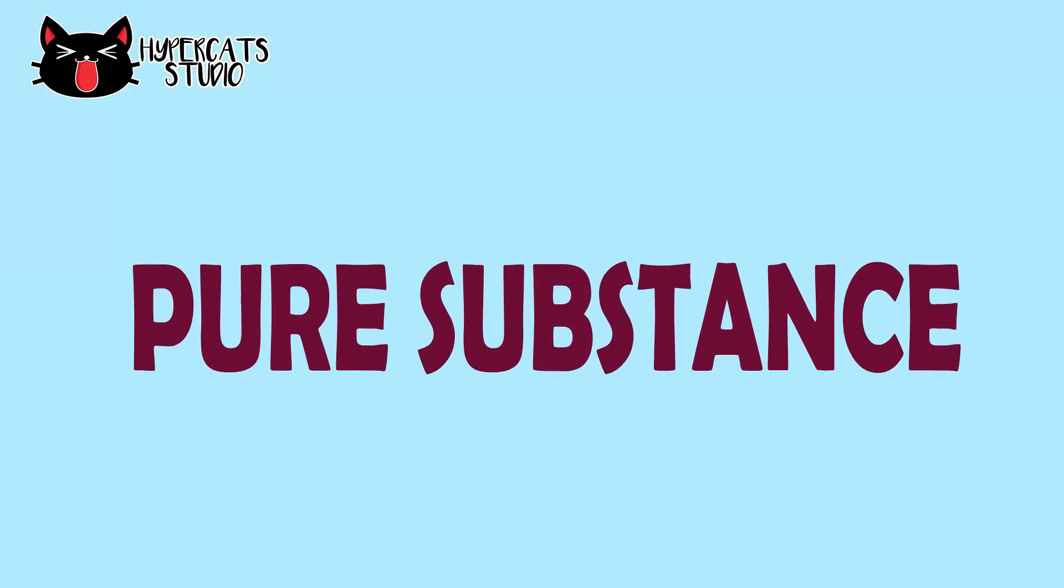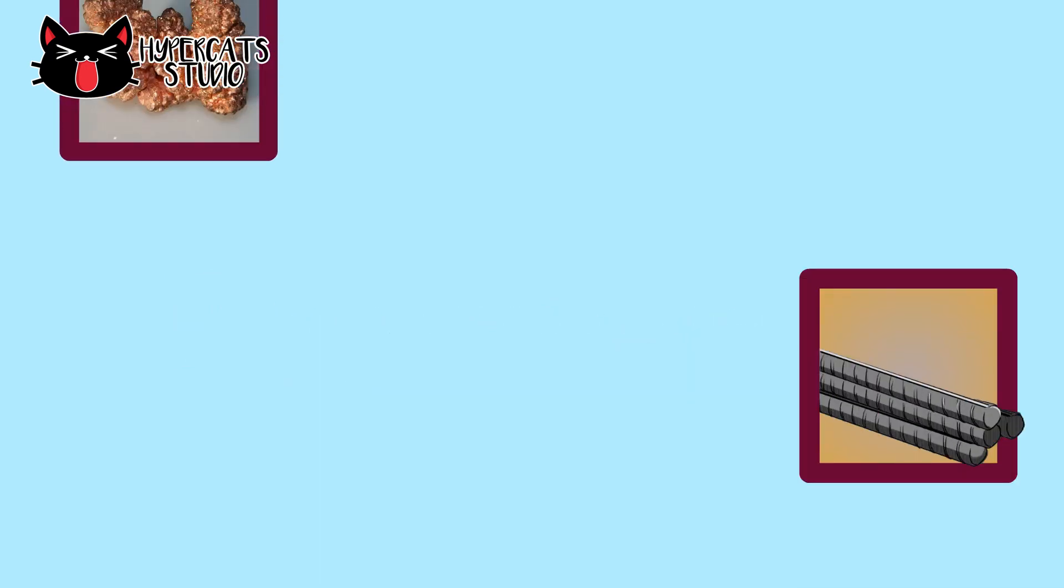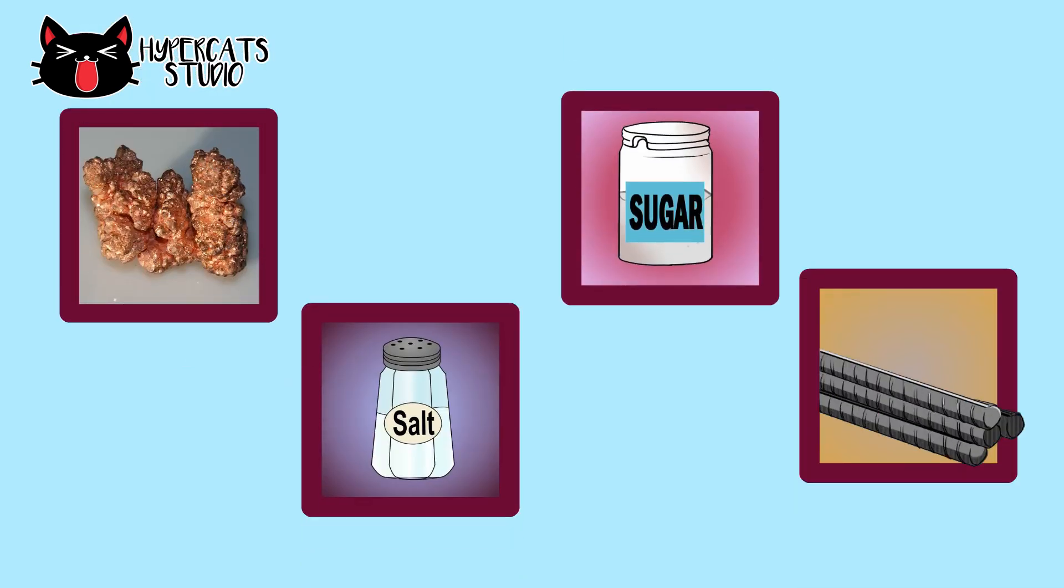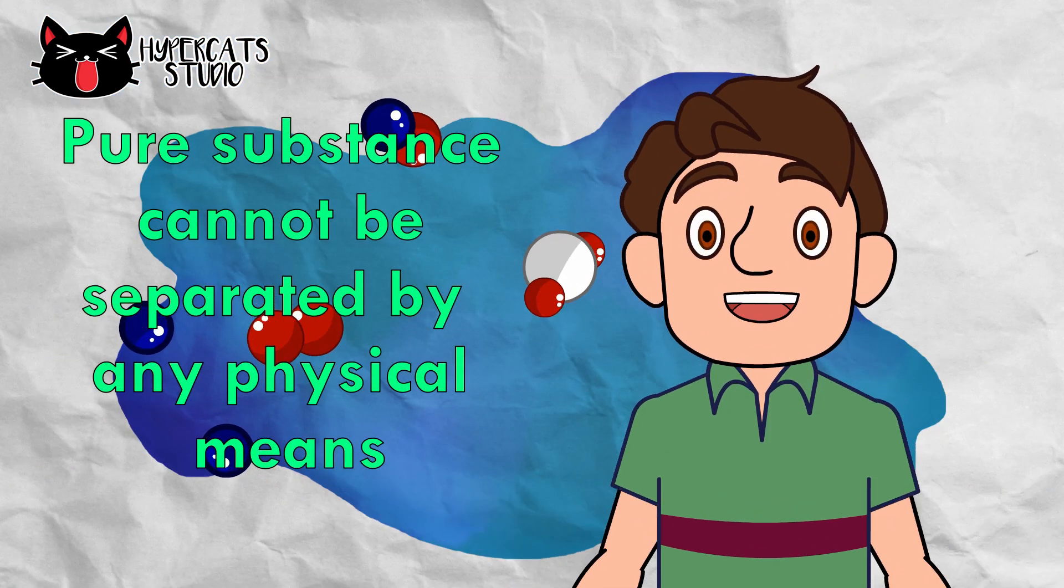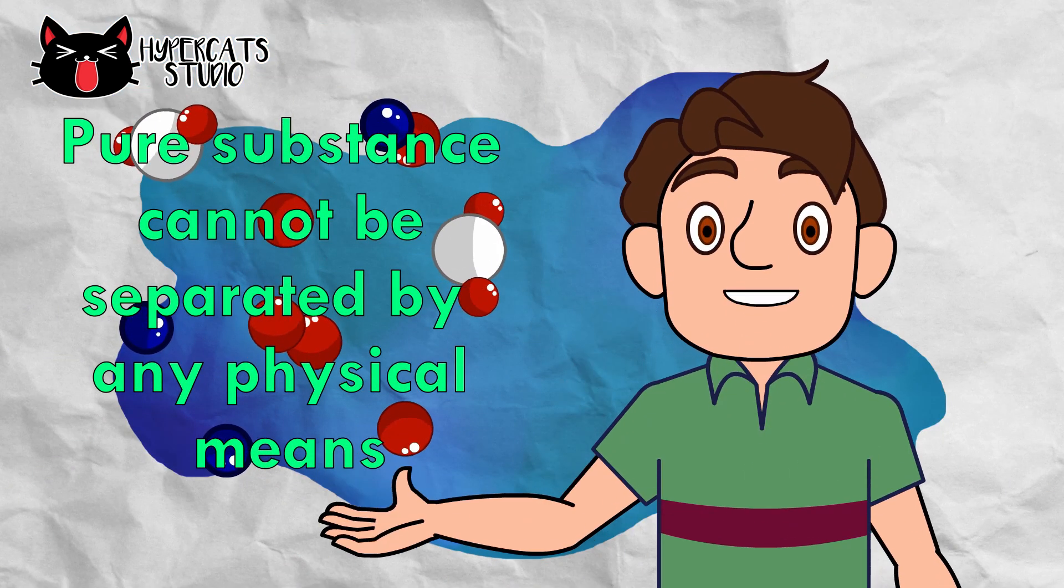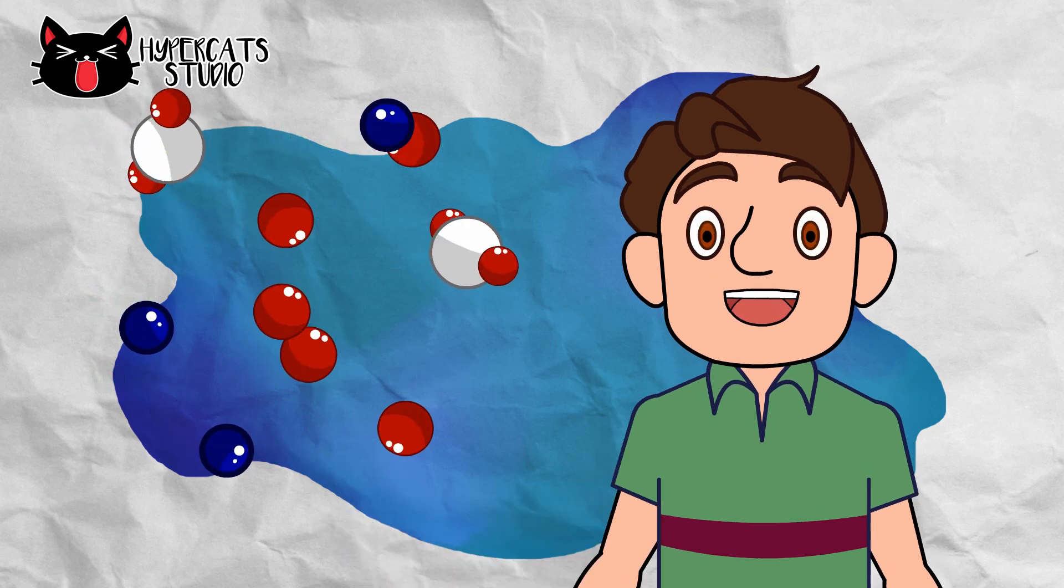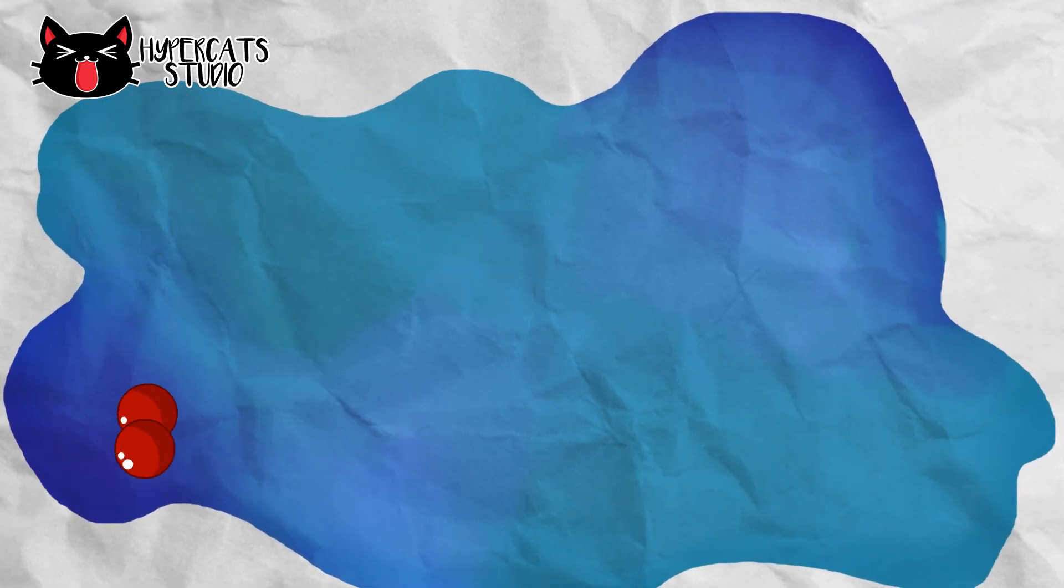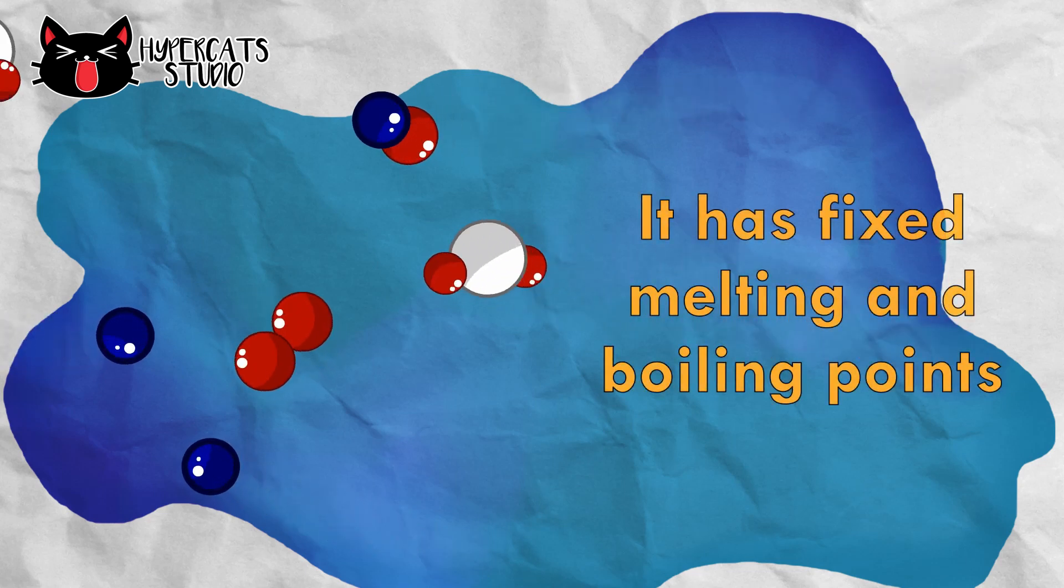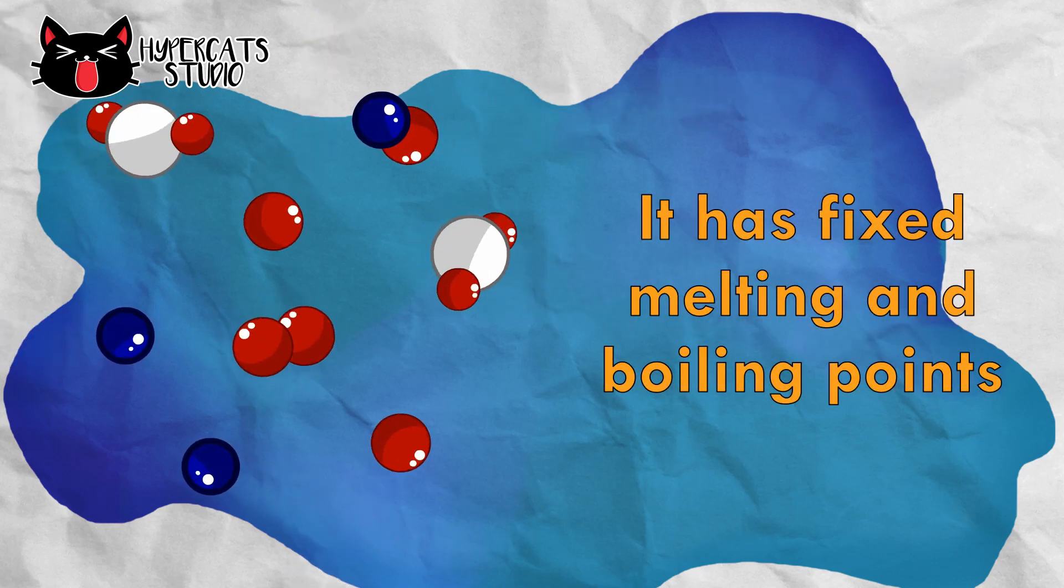A pure substance can be an element like iron and copper, or a compound like sugar and salt. A pure substance cannot be separated by any physical means because it is made up of a single element. It also has constant physical and chemical properties and has fixed boiling and melting points.